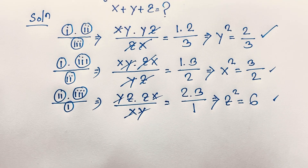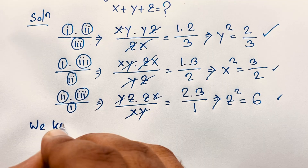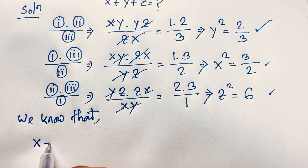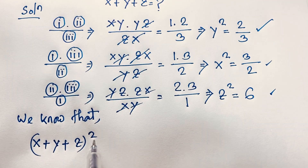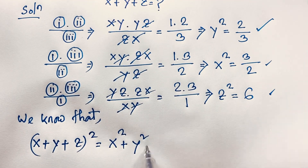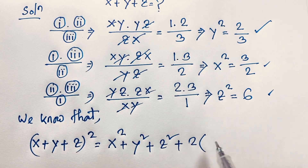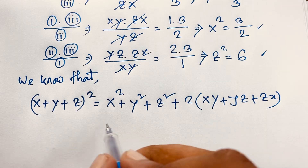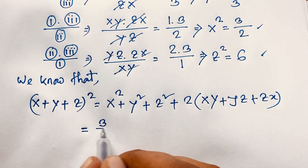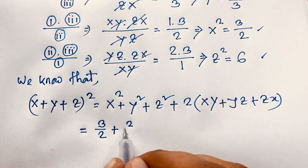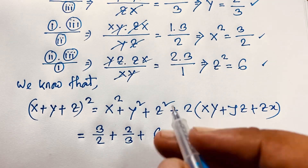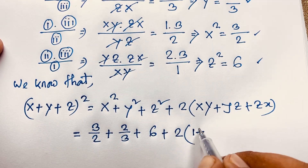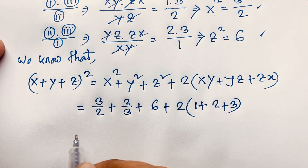We know the formula: (x + y + z)² equals x² + y² + z² plus 2(xy + yz + zx). Applying this formula: x² = 3/2, y² = 2/3, z² = 6, and 2 times (xy + yz + zx) = 2 times (1 + 2 + 3) = 12.